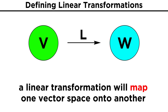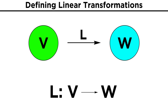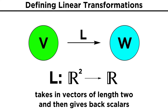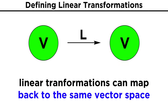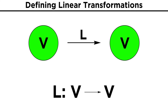In this way, a linear transformation can be said to map one vector space V to another vector space W. This is denoted as L: V → W. The linear transformation will only take in vectors from the vector space V, and will always give back vectors from the space W. For example, in mapping L: R2 → R, this will only take in vectors of length two and give back scalars. While linear transformations are flexible in mapping from one vector space to another, it is still possible to map back to the same vector space, represented as L: V → V.